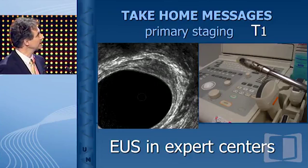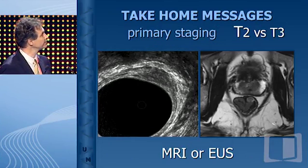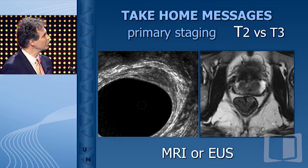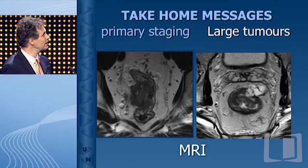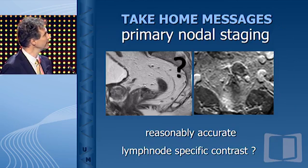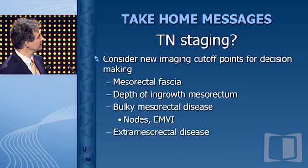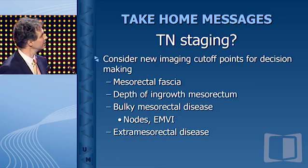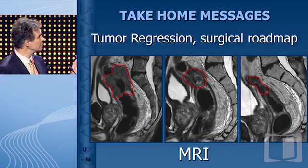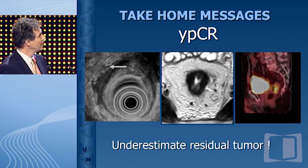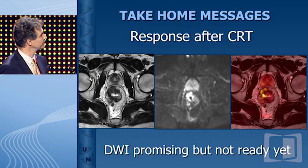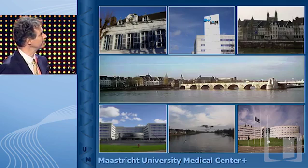In conclusion, primary staging for very early tumors is best done with EUS. For T2 versus T3, MRI is preferred, though EUS can be used. For everything bigger, MRI is the best option. Nodal staging is reasonably accurate, and we hope to improve it. We should reconsider classical staging and include the depth of ingrowth in the mesorectum and bulky nodal disease. Restaging can help the surgeon in planning big surgery and in organ-saving treatment, though we must be aware that we underestimate residual tumor. DWI is promising but not completely ready yet. Lymph node staging gets easier after chemoradiation. Thank you for your attention.